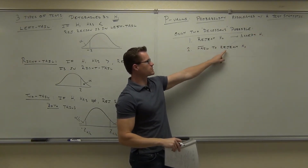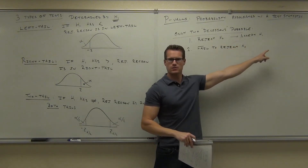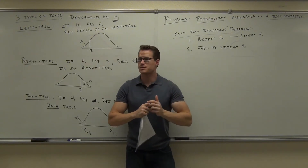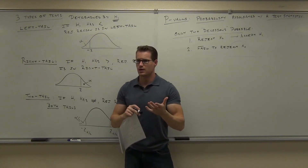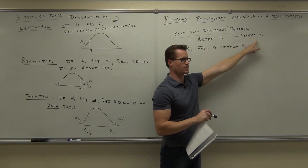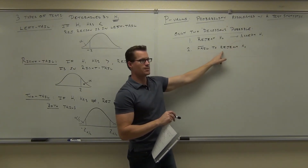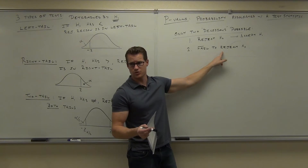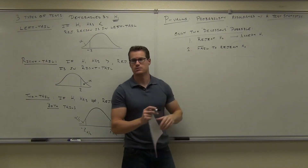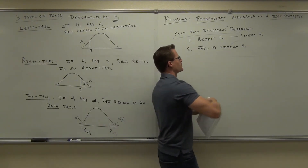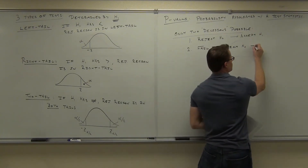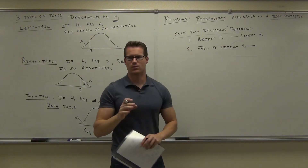If you fail to reject H₀, can you still accept H₁? Remember, H₀ and H₁ are opposite statements. If you reject H₀, it means it's clearly false — which means H₁ is clearly true. But if you fail to reject H₀, it means it's not necessarily false, and it's not necessarily true either. You can't say anything about H₁, so there's no decision. If you reject H₀, you accept H₁. If you fail to reject H₀, you don't know anything about your statement whatsoever.